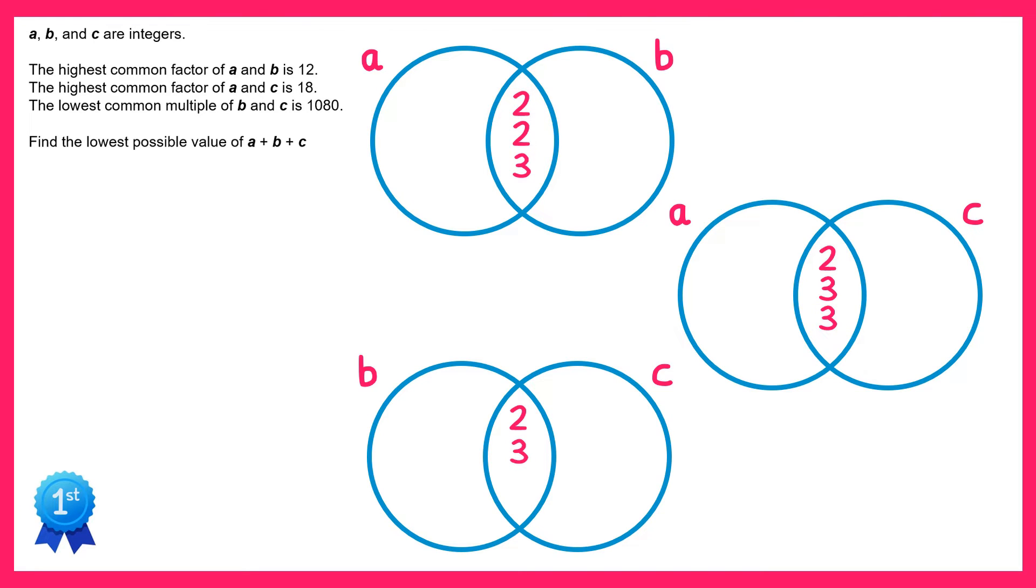Now let's return to the first Venn diagram. Notice how there are two 2's in the intersection here. We can see that there are two 2's inside the A circle, which means wherever else we write an A circle there must be two 2's. So there's a circle here that represents A, but at the moment that's only got one 2 in it, so we need an extra 2 inside this circle.